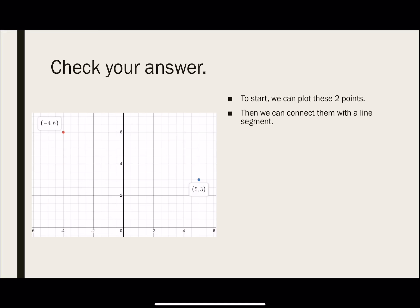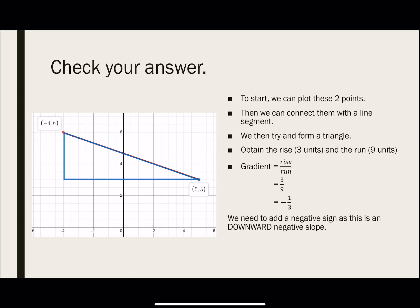Similarly, we can connect them with the line segment. And again, we form a triangle. And we find the rise, 3 units, the run, 9 units. Using the gradient formula, rise over run, we have 3 over 9, which can be reduced to 1 third. Again, we will add a negative sign as this is a downward negative slope. Downhill as you move from left to right.